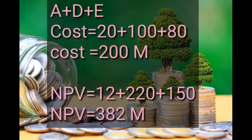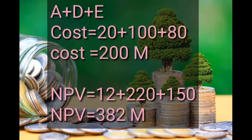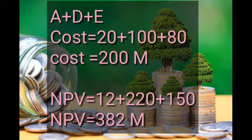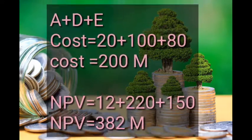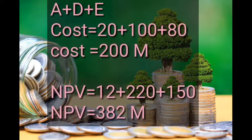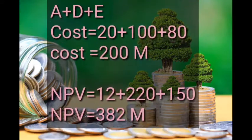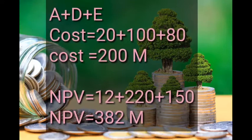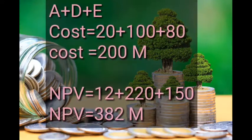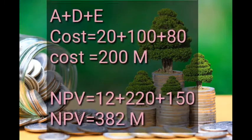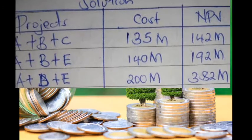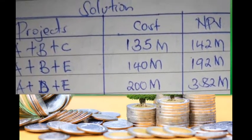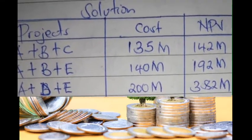We try the combination A+D+E. The cost of A is 20, D is 100, and E is 80, giving a total cost of 200 million — a perfect combination, since it exactly matches the total expenditure. It gives an NPV of 382 million. We record it: projects A+D+E, total cost 200M, NPV 382M. This is a perfect combination, but we continue estimating others.